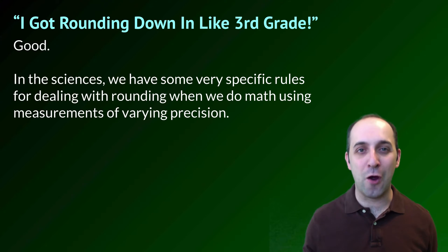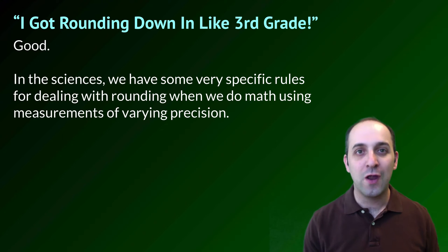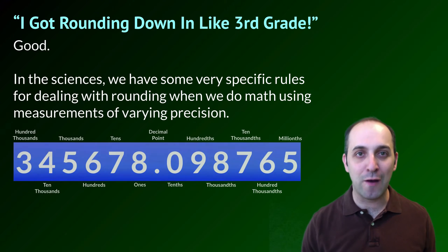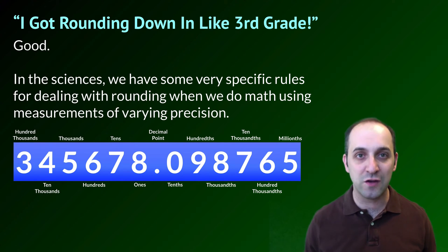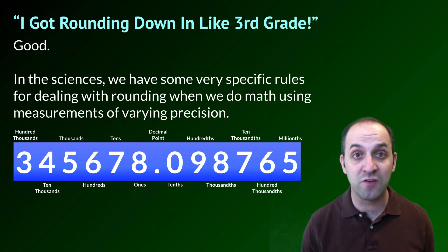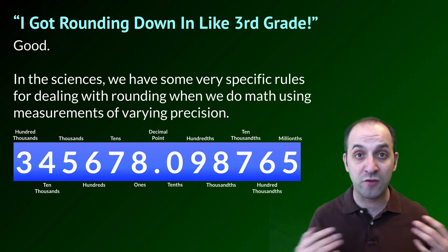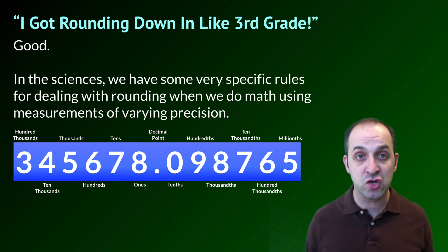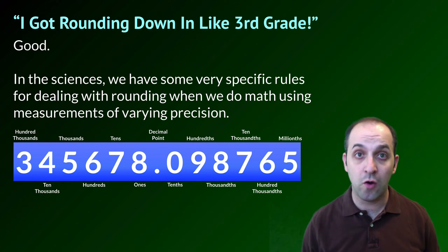You totally understand rounding — you've known it since you were eight years old, and I get that. I'm not talking about this kind of rounding. I'm really just talking about the kinds of special rules that we need to use here in chemistry to deal with numbers when they have different numbers of significant figures or different amounts of precision. When we deal with those numbers and we start using them in calculations, we're going to have to change our answer depending upon certain rules.